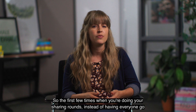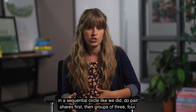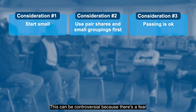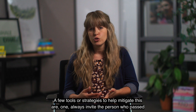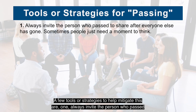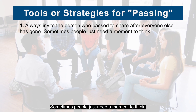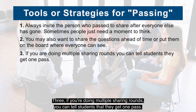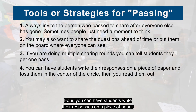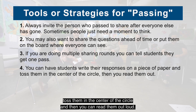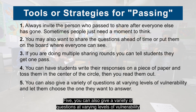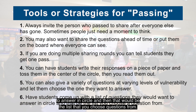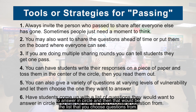The first few times you do sharing rounds, instead of having everyone go in a sequential circle, do pair shares first, then groups of three, four, etc., until they get more comfortable sharing with the whole circle. Next, passing is okay — this can be controversial, but a few strategies to help: always invite the person who passed to share after everyone else has gone; share questions ahead of time or put them on the board; if doing multiple rounds, tell students they get one pass; have students write responses on paper, toss them in the center of the circle, and read them aloud; give a variety of questions at varying levels of vulnerability; or have students come up with their own list of questions they'd want to answer — that can help with buy-in.